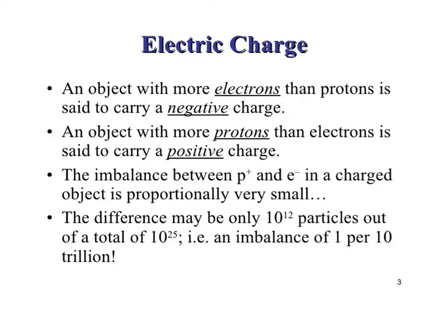This imbalance between protons and electrons in a charged object is proportionally very small. The difference may be only 10 raised to power 12 particles out of a total of 10 raised to power 25. That is an imbalance of 1% per 10 trillion.